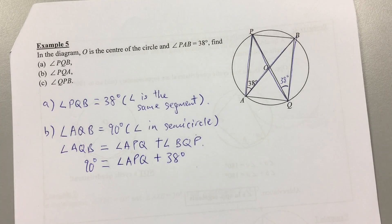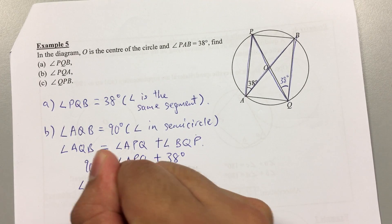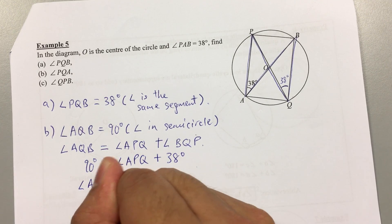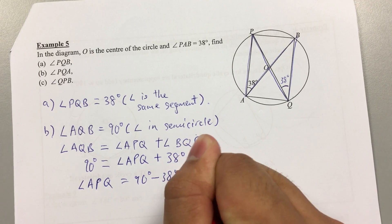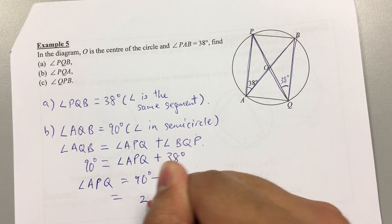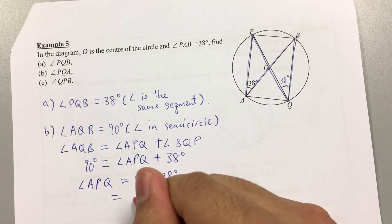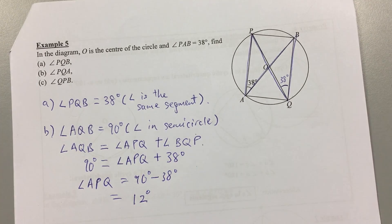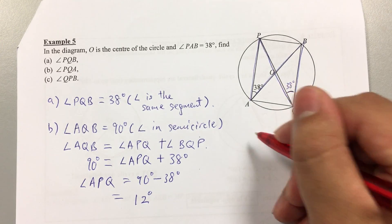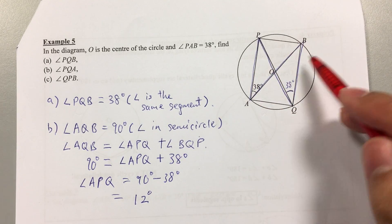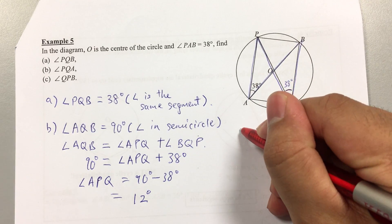The answer is 52 degrees. It's quite straightforward — you just need to look at your diagram carefully and figure out what to do. Don't be afraid; examine the diagram closely.